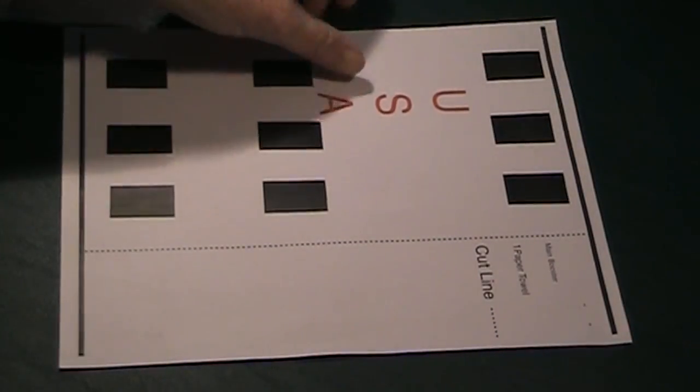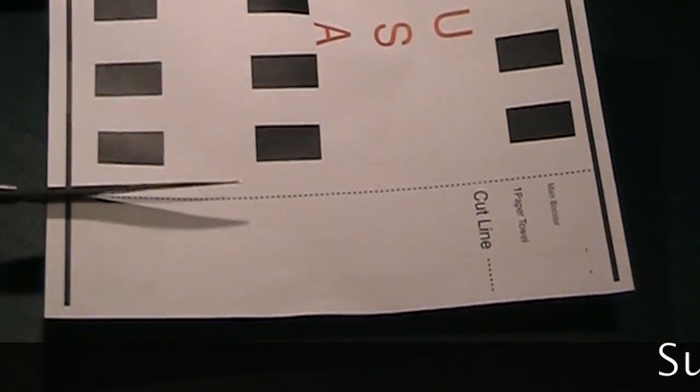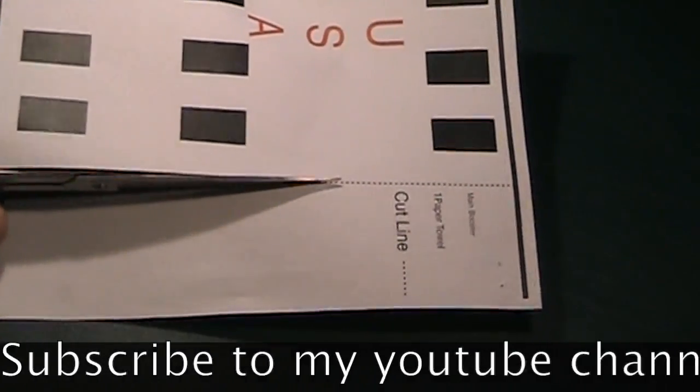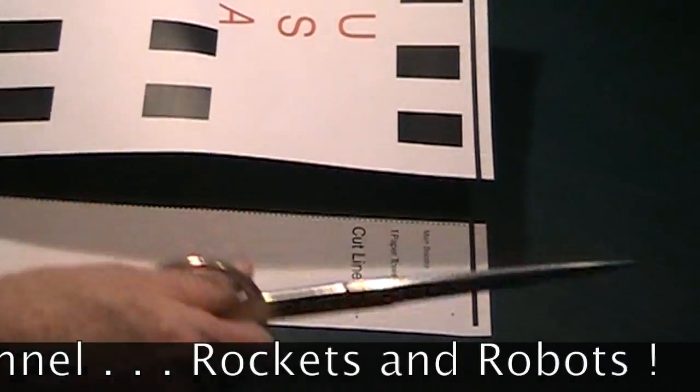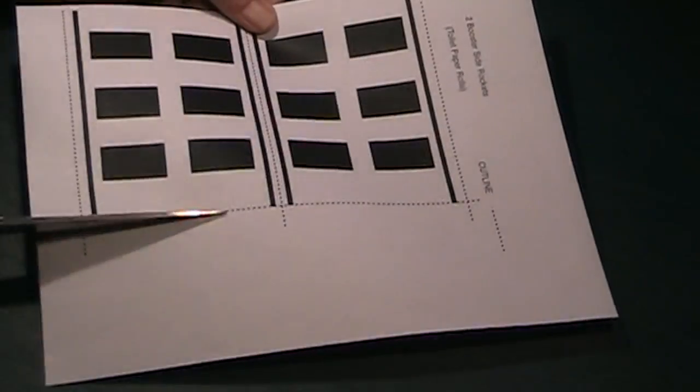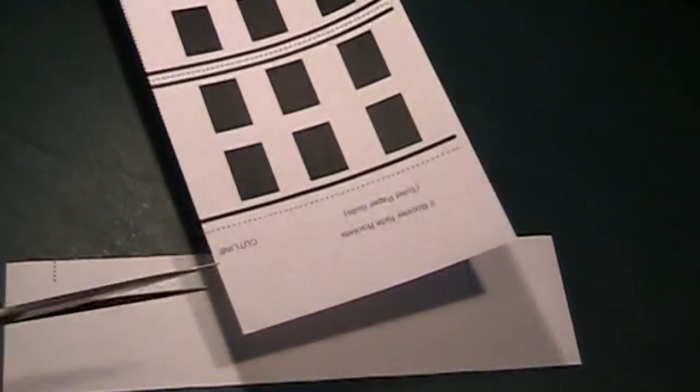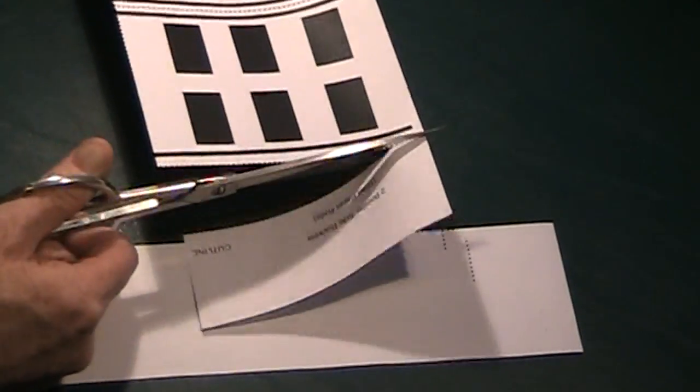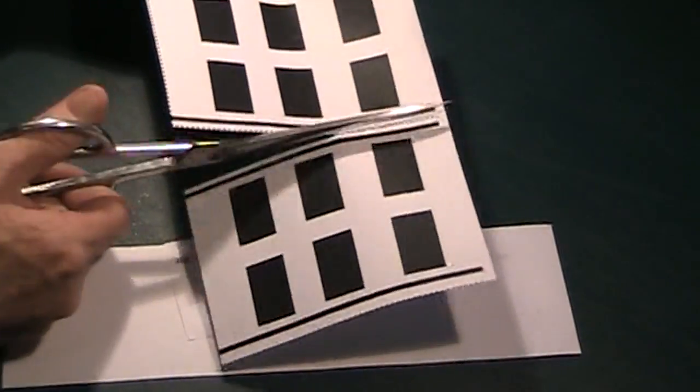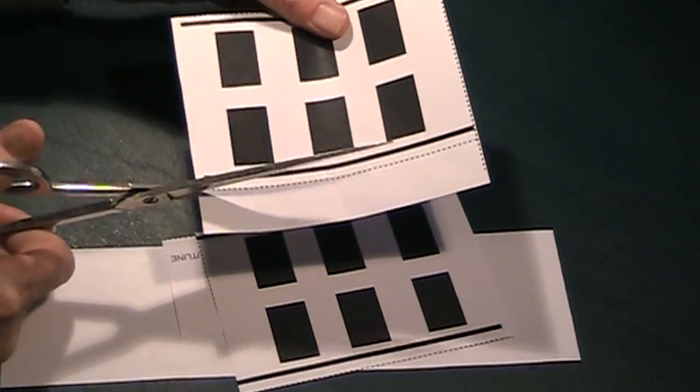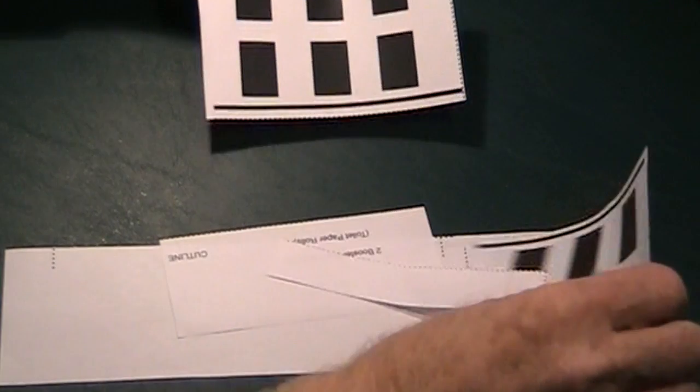Let's start with the first page. This is for your paper towel roll. Just cut along the dotted line. It's just that easy. The next page is for the toilet paper rolls. Again just cut along the dotted lines and you'll wind up with two pieces. One for each toilet paper roll. It's just that simple.